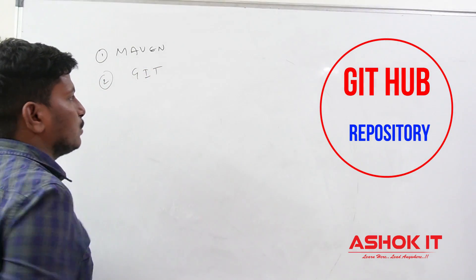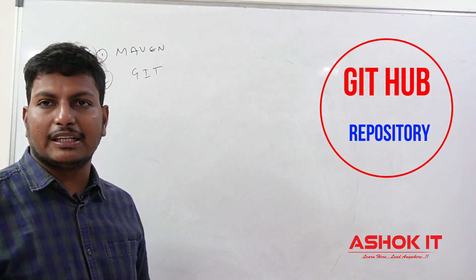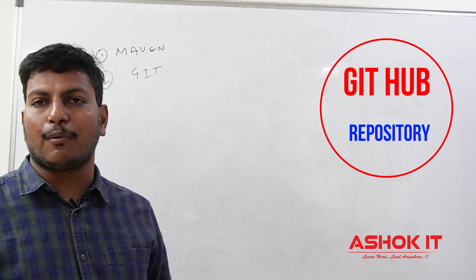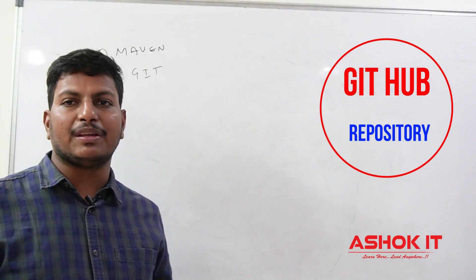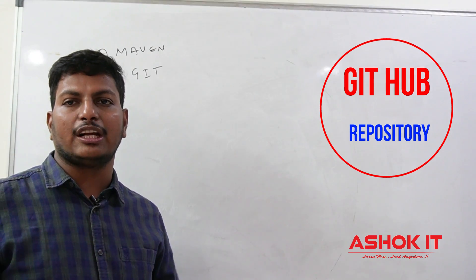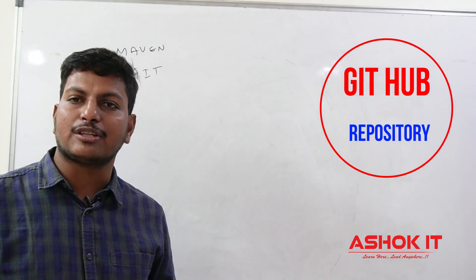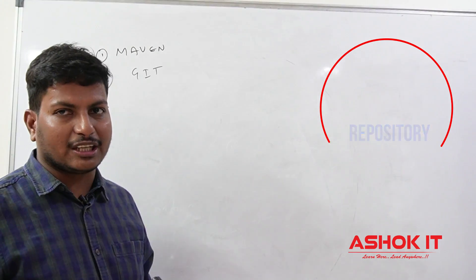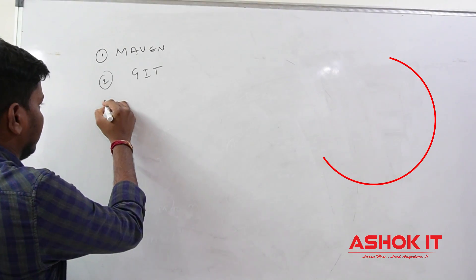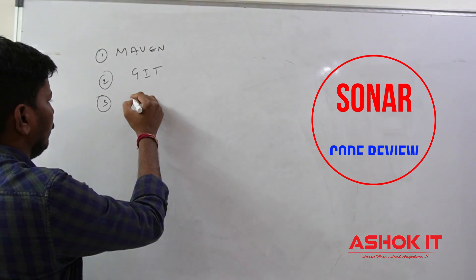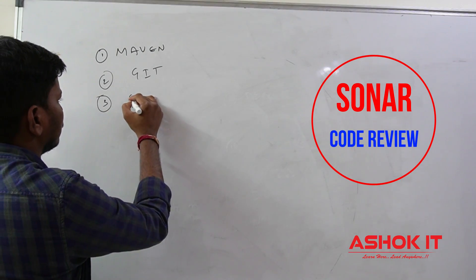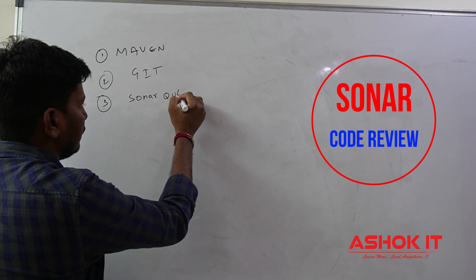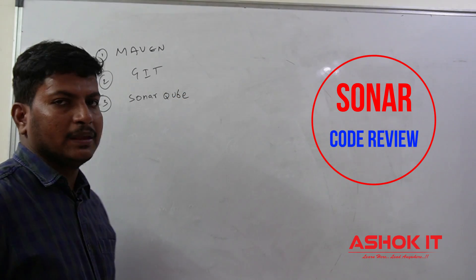The second one is Git. Git we are going to use as version control software. The project development team will store their source code into a Git repository. We need to take the code from the GitHub repository to perform our DevOps operations. Git we are going to call as repository software.